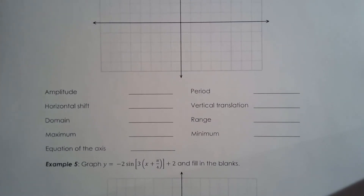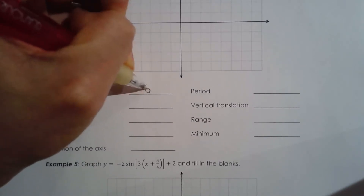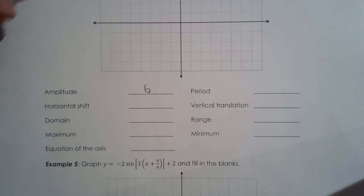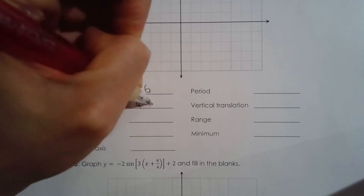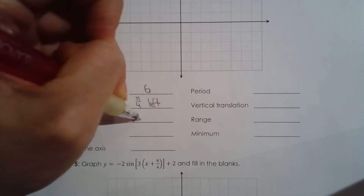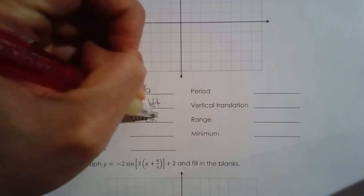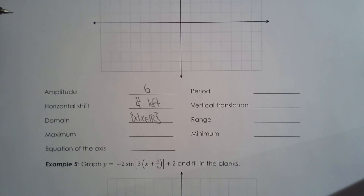The amplitude depends on the absolute value of a, which is negative six, so the amplitude is six — it has to be positive. The horizontal shift is pi over four to the left. The domain is all real numbers because there are no restrictions for the sine and cosine functions, unlike the other four trig functions.